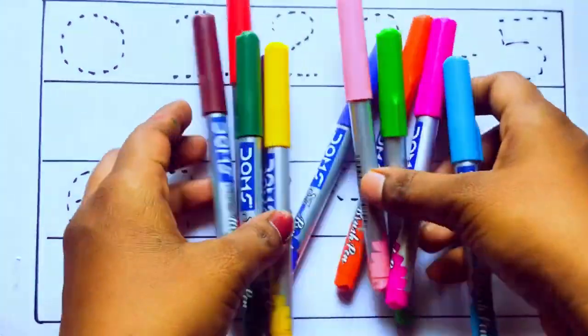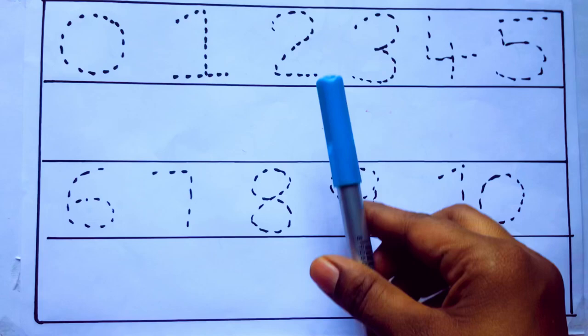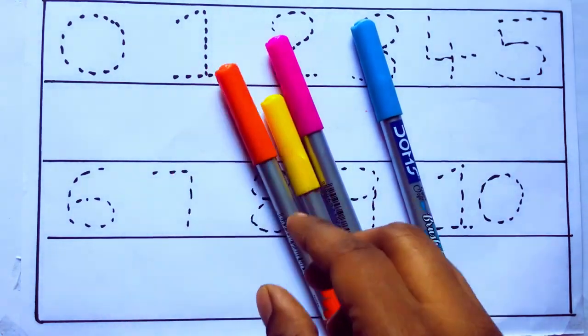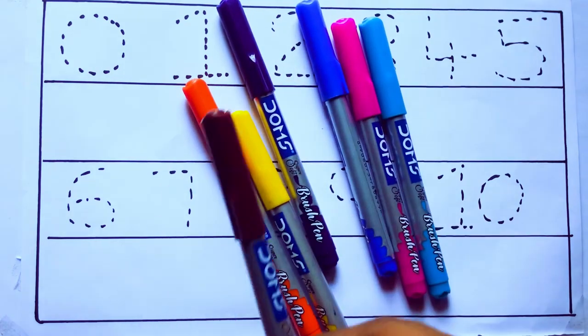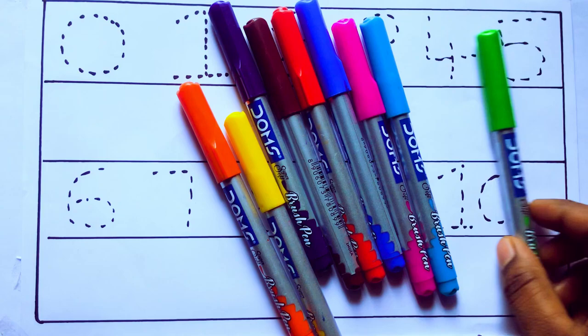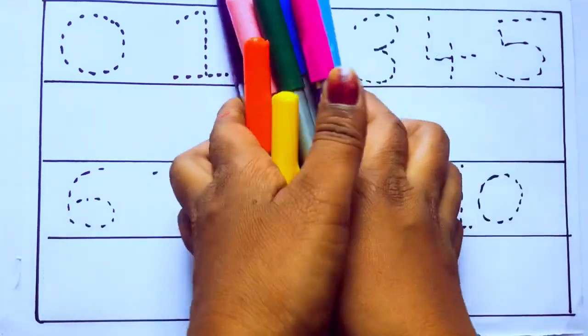Let's learn some colors. These are all the color pencils. Let's learn the names. Sky blue color, pink color, yellow color, orange color, violet color, blue color, brown color, red color, green color, and pink color.